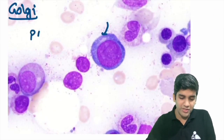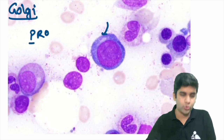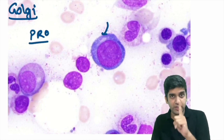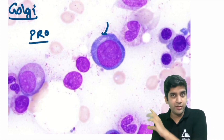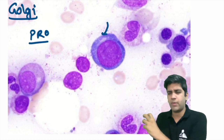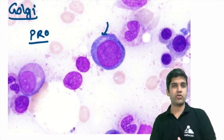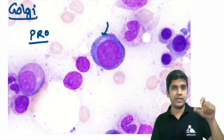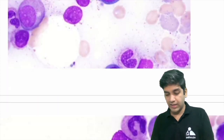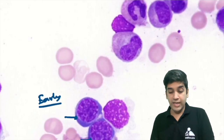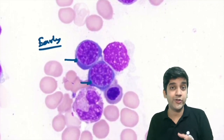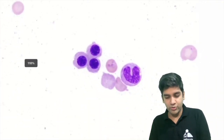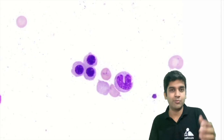Now compare: this one I call a pro-erythroblast or pro-normoblast. The nucleus is more important here — I do have a nucleoli, maybe not superbly defined, but a pale area that's a nucleoli. And in the early normoblast I have lots of stipple areas. These are the distinguishing features between the two.